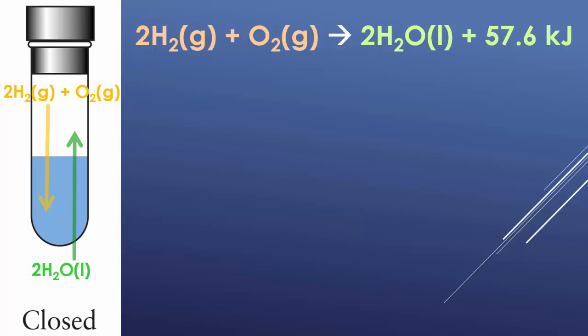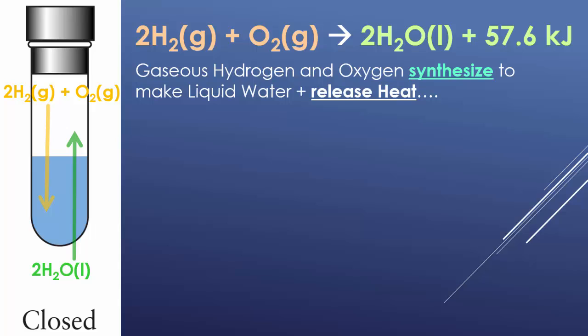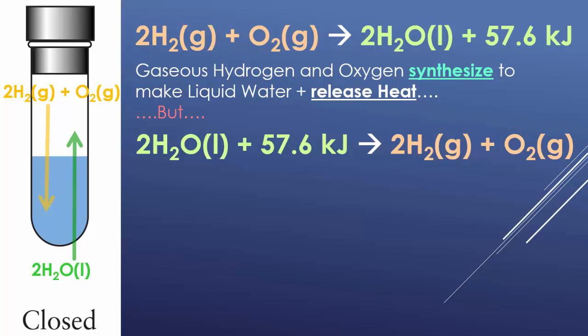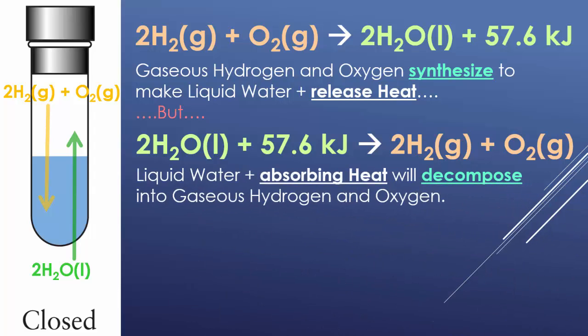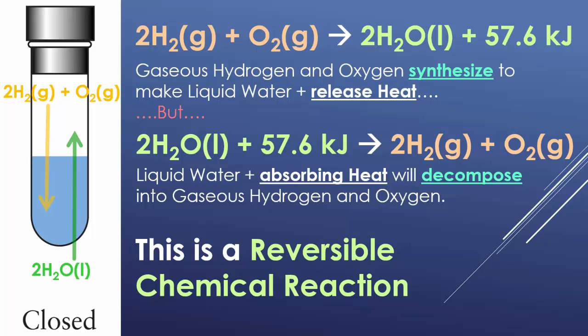Everything we do with Le Chatelier's principle involves closed systems — nothing leaves and nothing comes in without us putting it in. Equilibrium can only happen in closed systems. For example, hydrogen gas and oxygen gas produce water and an enormous amount of heat and energy. In a closed system, that water — using the heat just generated — can turn back around and make the original hydrogen and oxygen gas. Since nothing is lost to the universe, this is what we call a reversible chemical reaction.